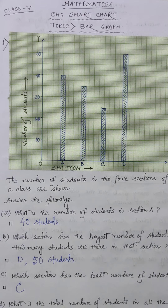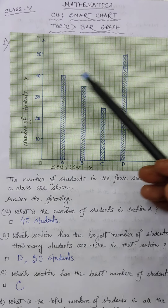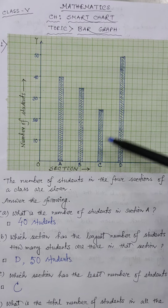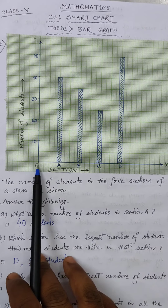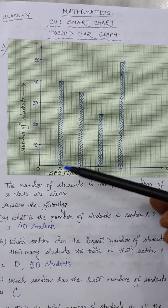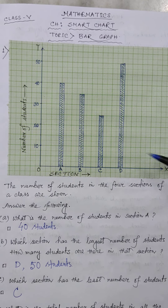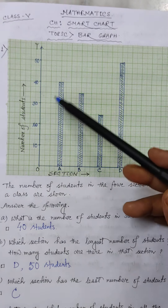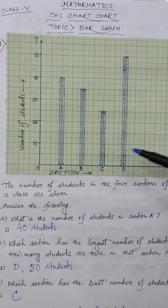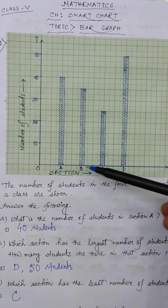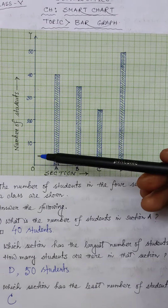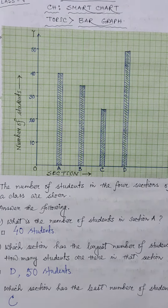So what is a bar graph? Here you can see it is a graph paper, and in each graph there are two lines. One is the horizontal line and another one is the vertical line. The horizontal line represents the x-axis and the vertical line represents the y-axis.